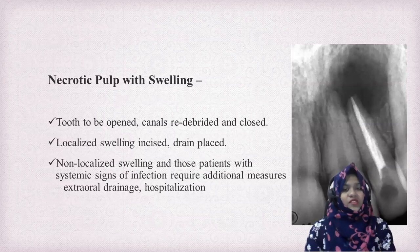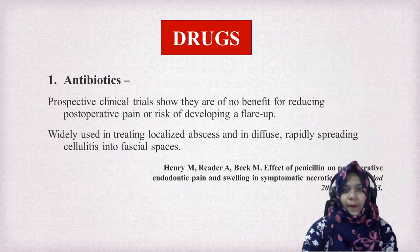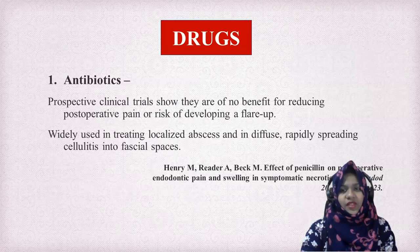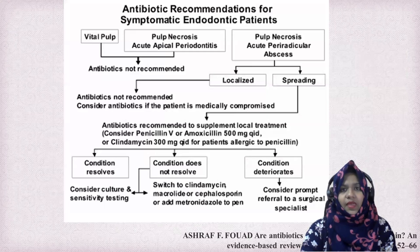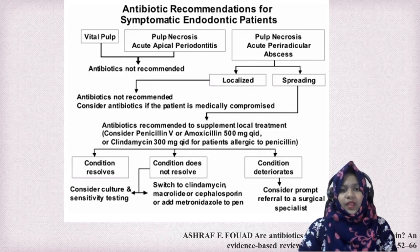In necrotic pulp cases with swelling, the teeth are opened, canals are re-irrigated, and closed. If there are severe signs of infection, the patient should be hospitalized and extraoral drainage should be done. Regarding drugs: antibiotics are of no importance in treatment of flare-up. In vital pulp and necrosis cases, antibiotics are not recommended. For periapical abscess — whether localized or spreading — if localized, antibiotics are not recommended unless the patient is medically compromised. If spreading, amoxicillin 500 mg is given. If the condition does not resolve, switch to clindamycin and consider culture and sensitivity testing. If it deteriorates, consider referral to a surgical specialist.